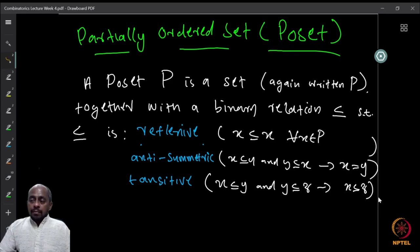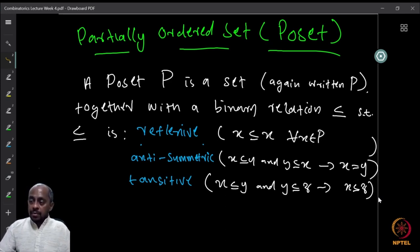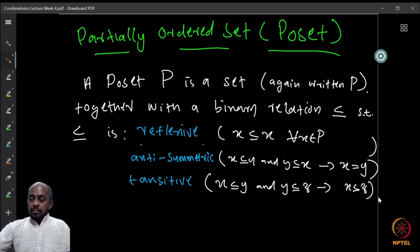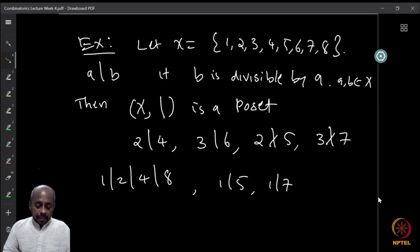When we do not allow reflexivity, the relation is called a strict partial order. We will not look at strict partial orders in this course.